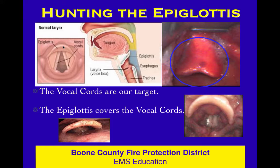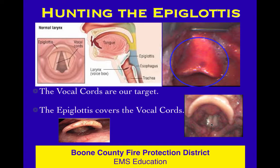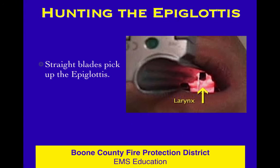Only in a Cormac-Lehane grade four view are you not going to see anything at all. In a grade three you see the epiglottis; in grade one and grade two you see part or all of the glottic opening respectively. The picture on the right side shows a curved blade in the vallecula, ready to apply a little pressure to flip the epiglottis up. While the vocal cords — the glottic opening — are our target, the epiglottis landmarks that for us and covers those vocal cords.